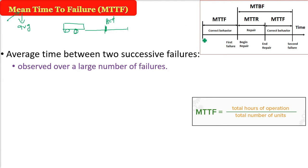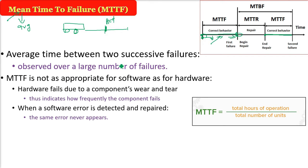This is observed over a large number of failures, not just one. So the system is working fine, then it fails — that is the first failure. It works fine again until the second failure. The time from where it started working fine to the second time it is working fine is the actual time we are talking about.